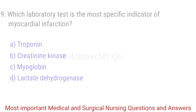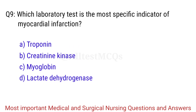Q9. Which laboratory test is the most specific indicator of myocardial infarction? The right answer is Option A: Troponin.